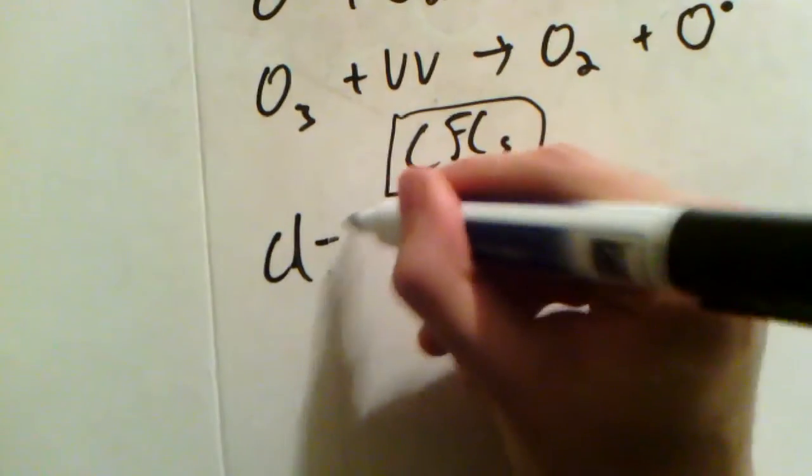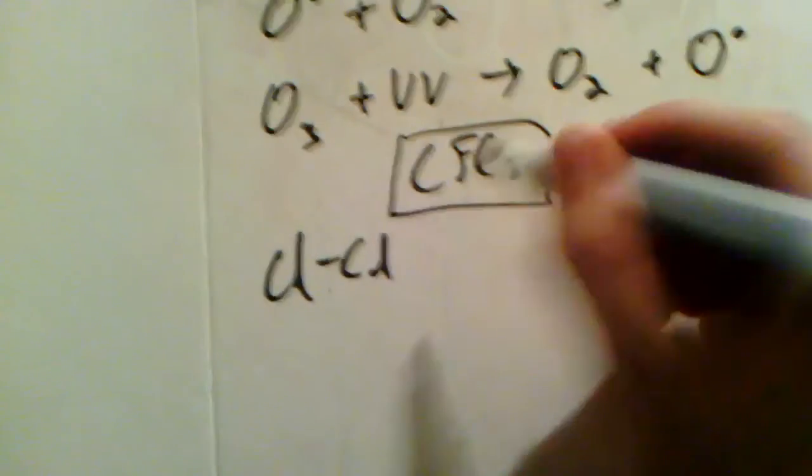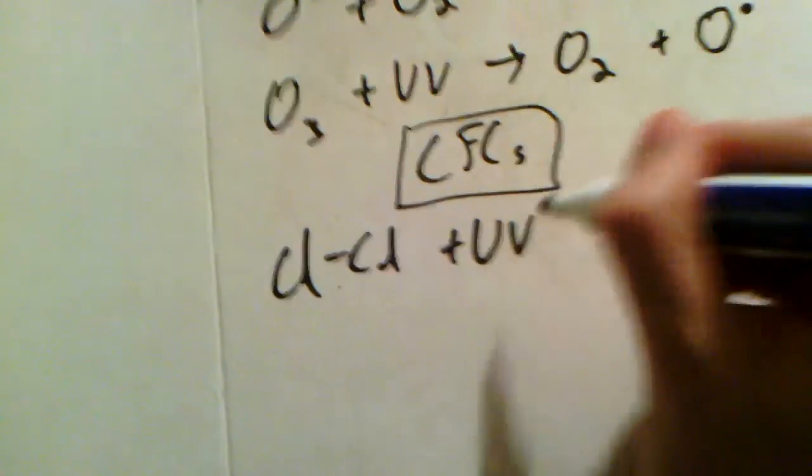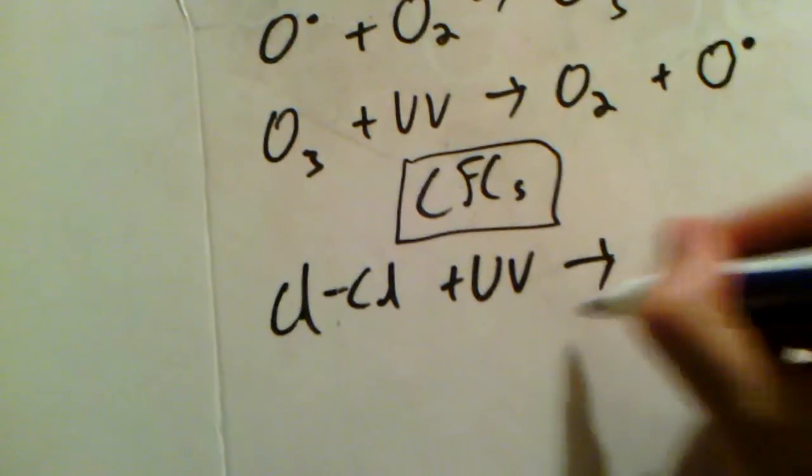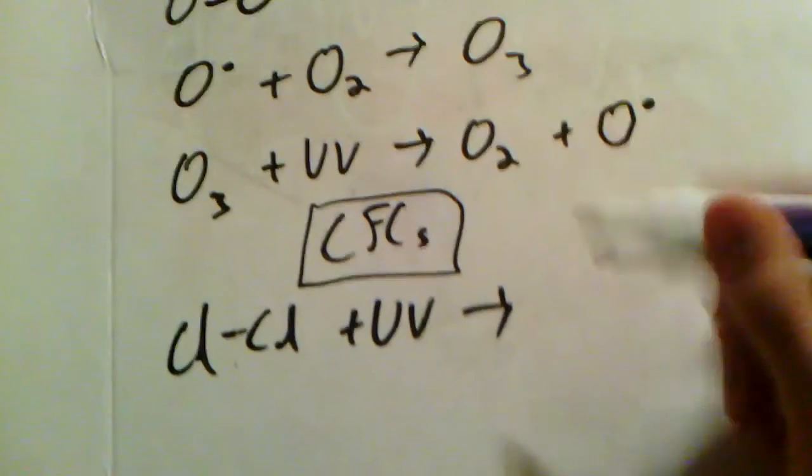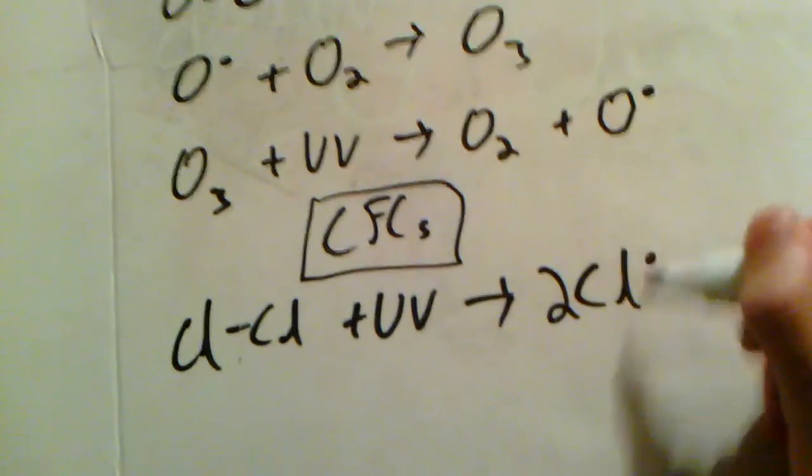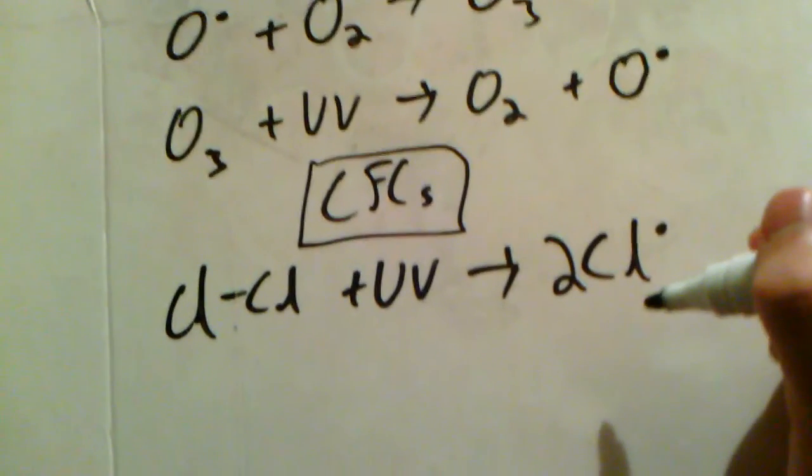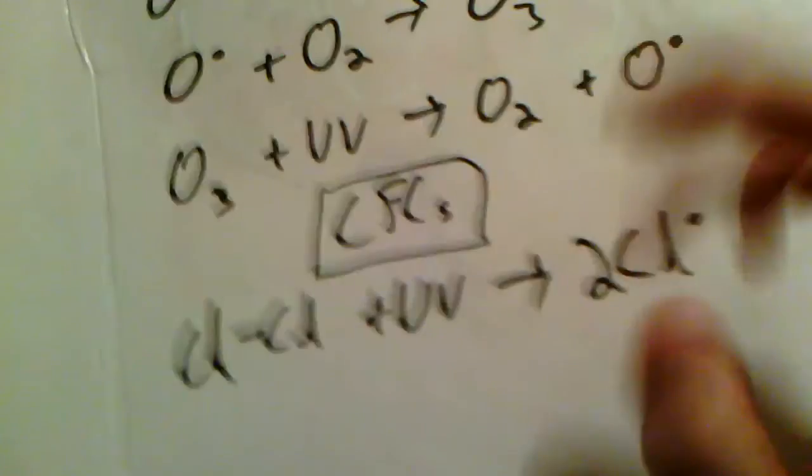Let's look at chlorine. Let's draw the chlorine molecule plus UV radiation. This is the free radical substitution from unit one again. So you then get two chlorine free radicals because it's breaking homolytically.